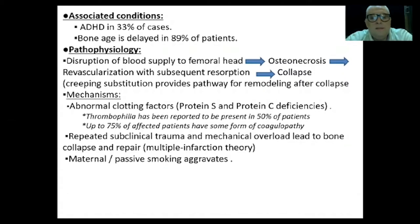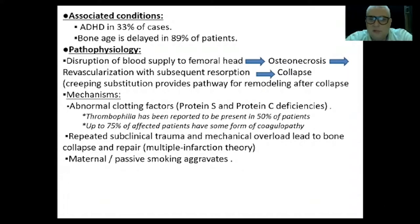Then the creeping substitution succeeds in resolving the osteonecrotic nucleus. After this happens, we enter the remodeling phase, which continues throughout. That is why remodeling is related to age. It is very important to consider the age of occurrence in prognosis, because the possibility of remodeling is better at a younger age.